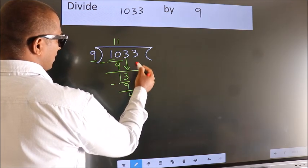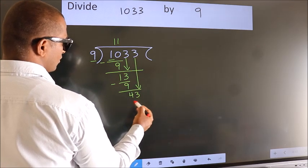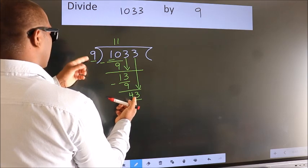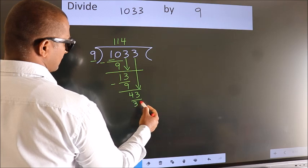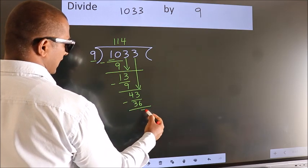After this, bring down the beside number. So 3 down. So 43. A number close to 43 in 9 table is 9 fours, 36. Now we subtract. We get 7.